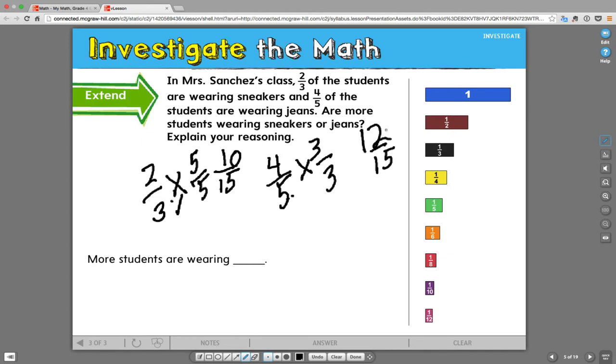Well, as I look at this, now I'm comparing fractions with the same denominator. In other words, whatever it is I'm dividing up, in this case sneakers and jeans or pieces of clothing, if we divided it into fifteen equal groups, twelve of those groups are jeans and ten of those groups are people wearing sneakers. Well, twelve is obviously bigger because we're comparing the same size pieces. So, more students are wearing jeans.